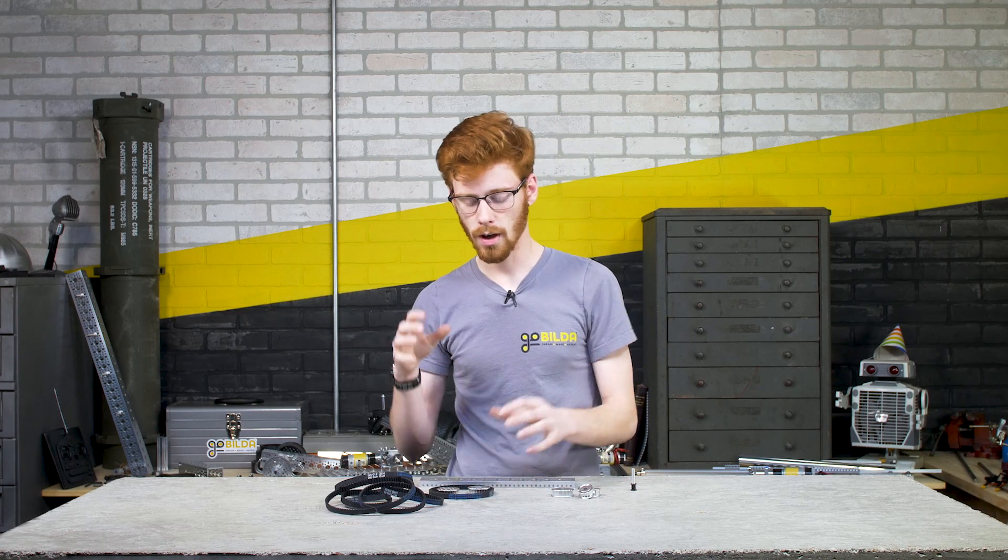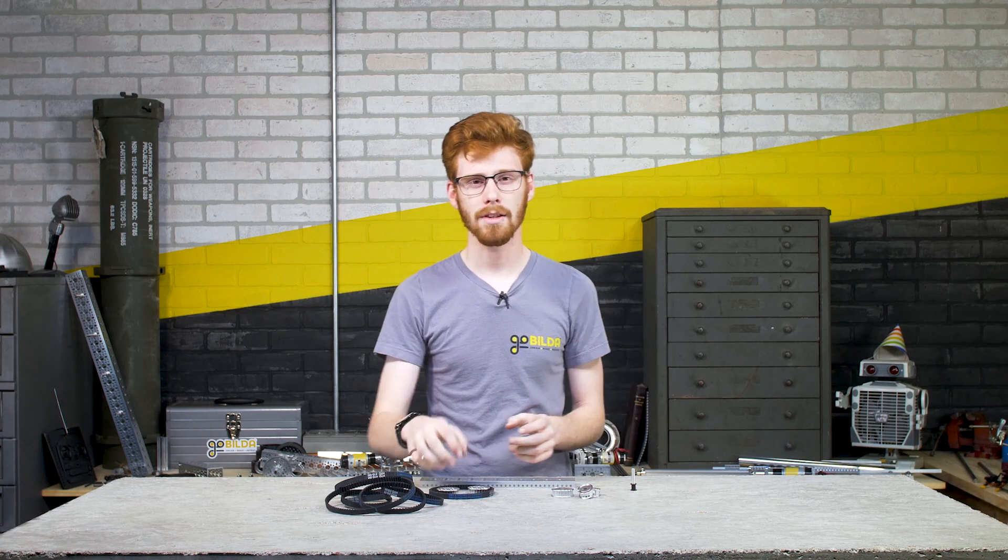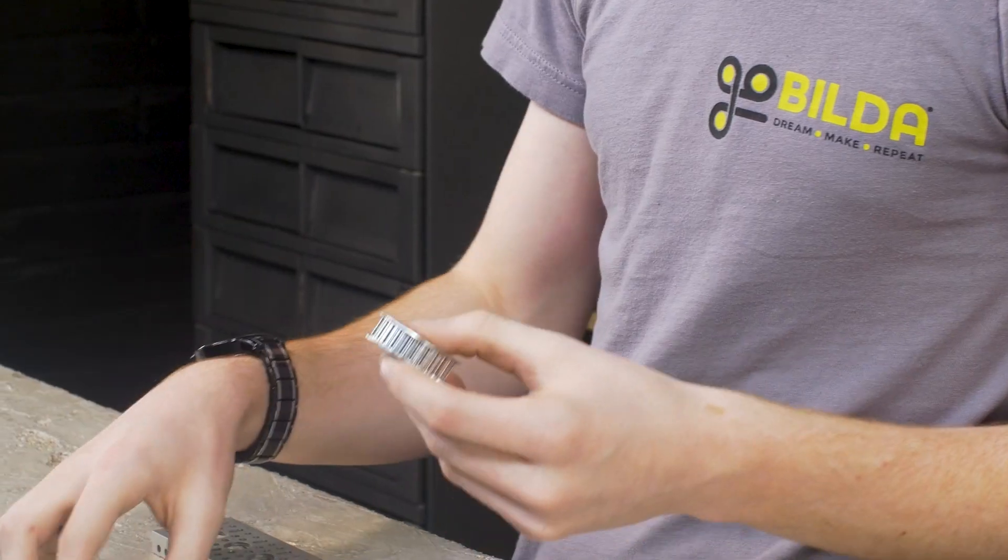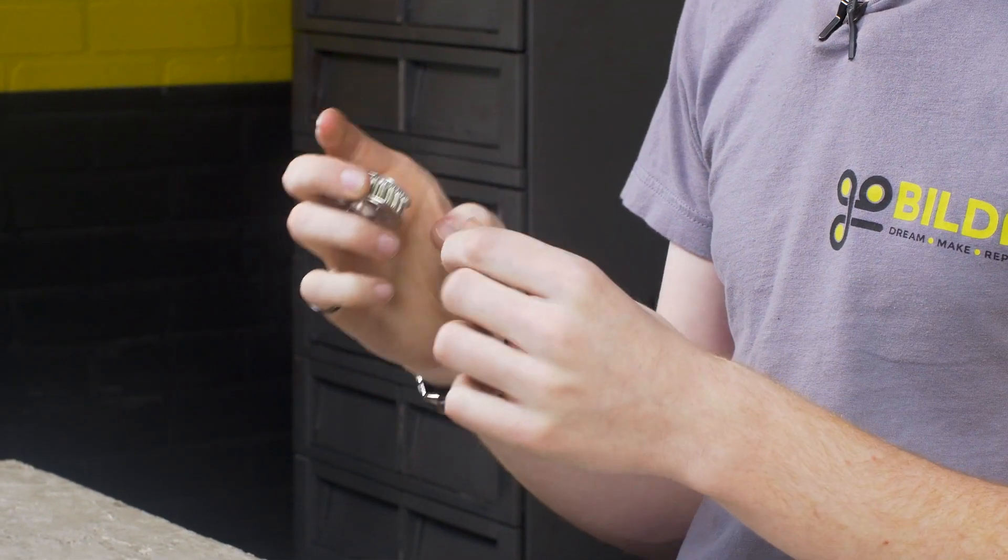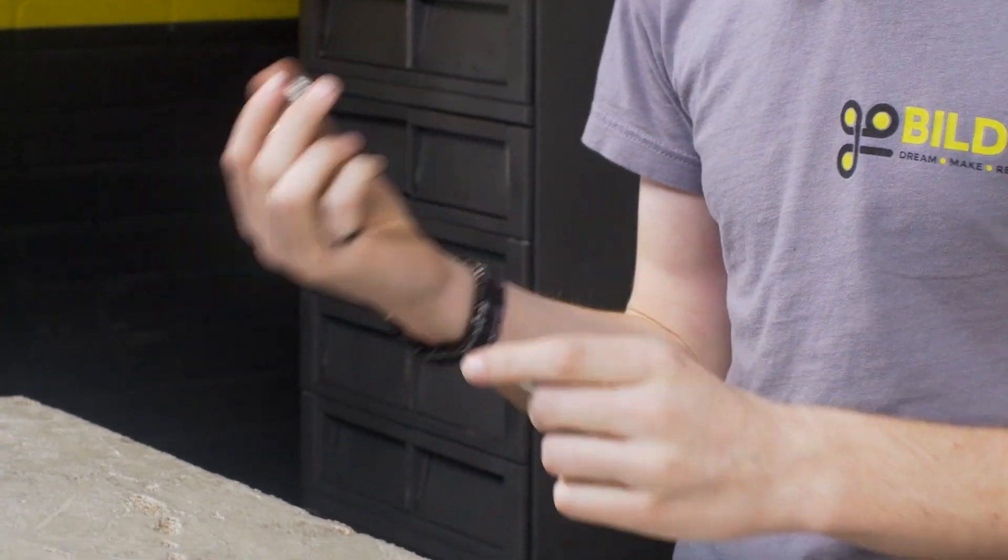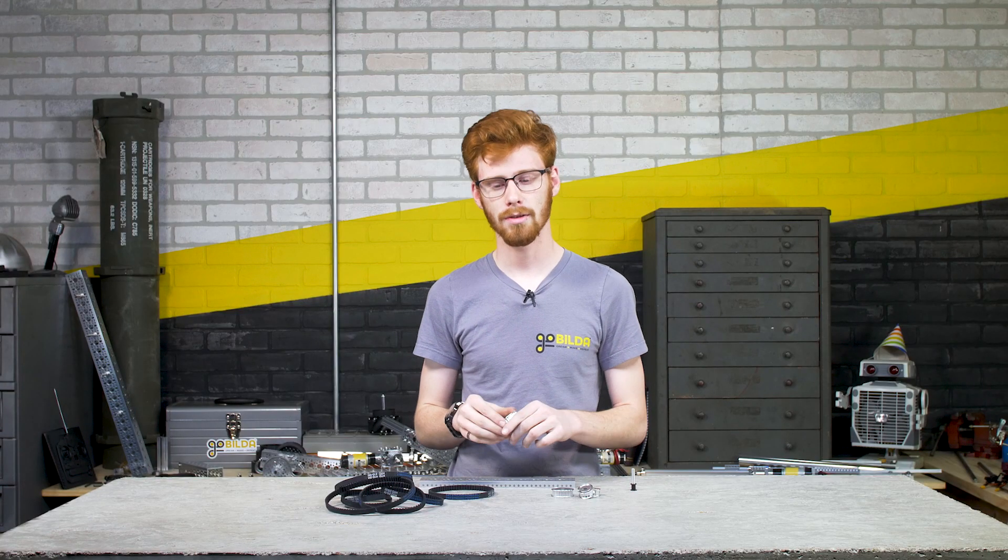Then you've just got to add the total number of teeth on one pulley. That's because you've got 50% wrap on each pulley so you've got half the teeth in contact or you've got the total on one pulley. This does only work with one to one ratios.